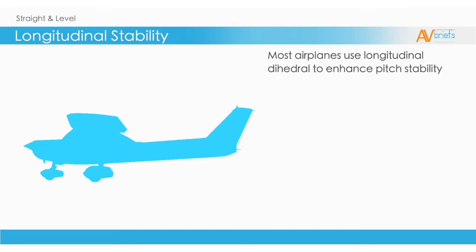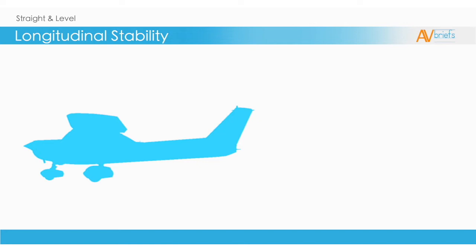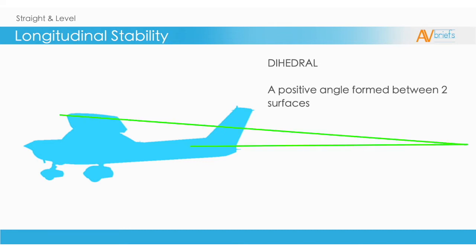Most airplanes use longitudinal dihedral to enhance pitch stability. Dihedral means a positive angle formed between two surfaces. This dihedral, or angle, is formed between the wing cord line and the horizontal stabilizer cord line.